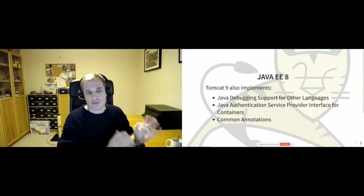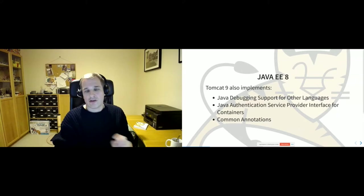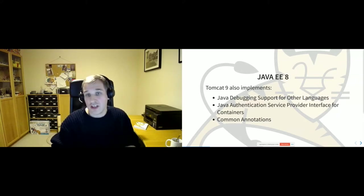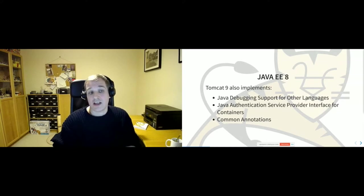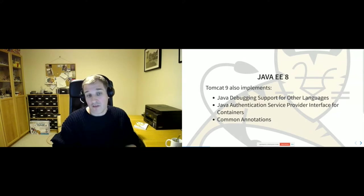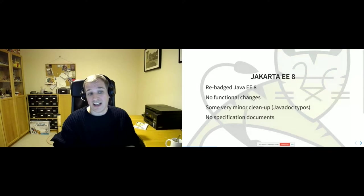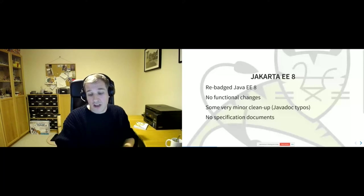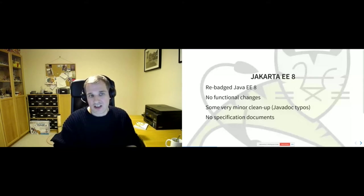That was Java EE 8, and that's what Tomcat 9 implemented. Then Oracle decided to donate Java EE to the Eclipse Foundation. The first thing produced was Jakarta EE 8, which was essentially just a rebadged Java EE 8. A few names were changed but there were no functional changes to the code at all — just minor cleanup like fixing typos in Javadoc. Essentially it was: copy the source across, make sure the build environment works, change the name. So Jakarta EE 8 is essentially identical to Java EE 8.